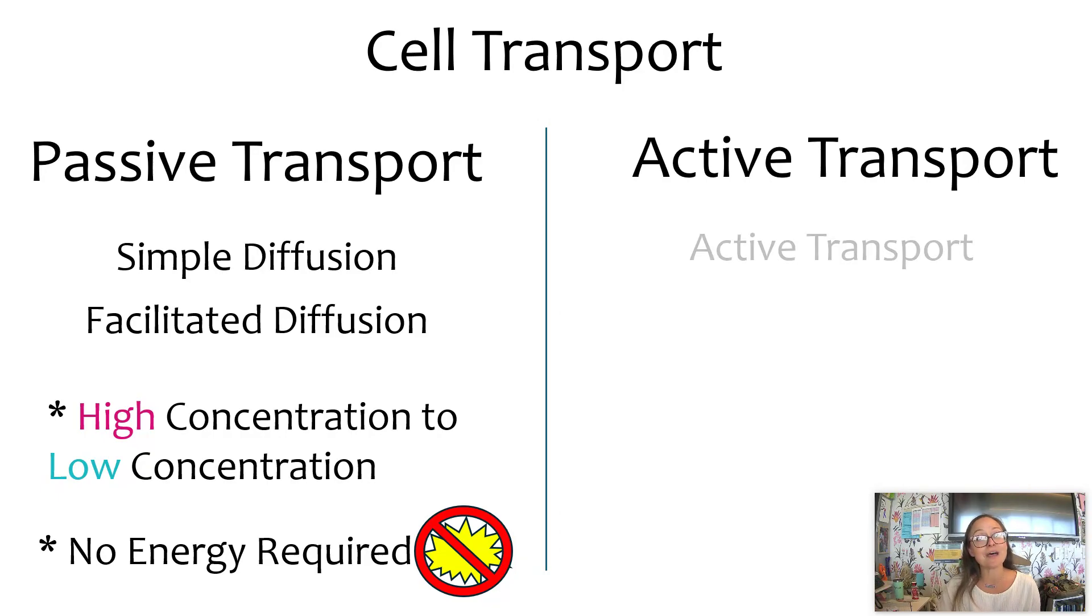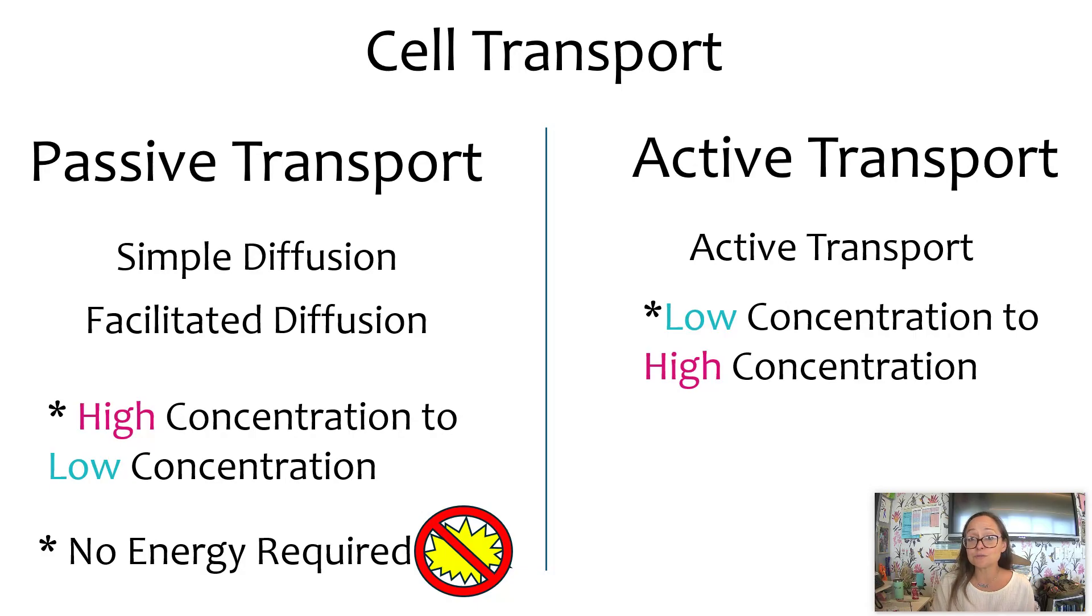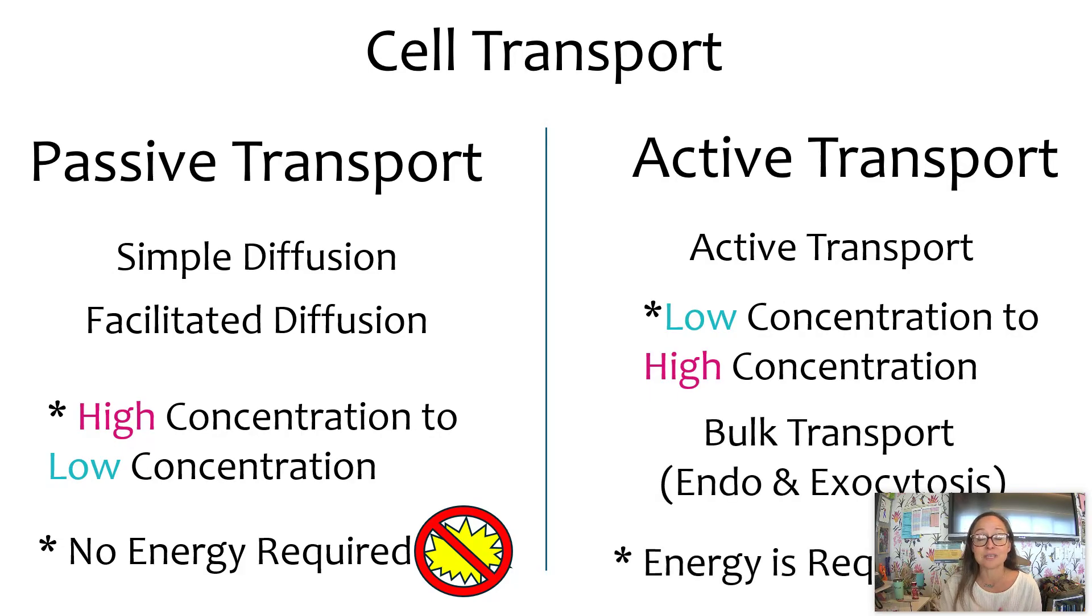And then we also have active transport. Now as it sounds, active is going to require energy. This could be molecules moving from a low concentration against their concentration gradient from low to high. I often think about this as like pushing something uphill. And then there's also bulk transport, which is endo and exocytosis.